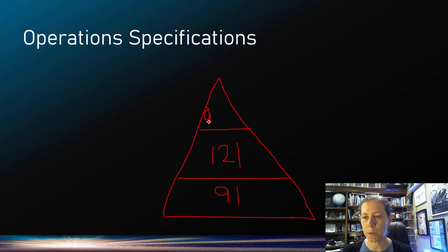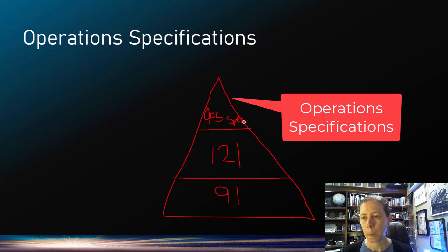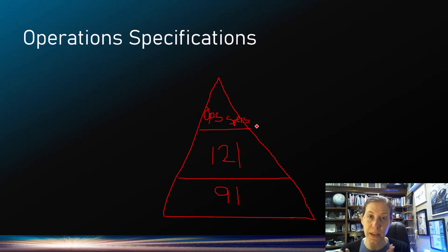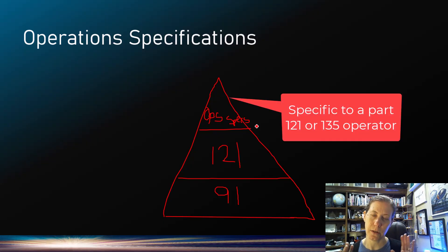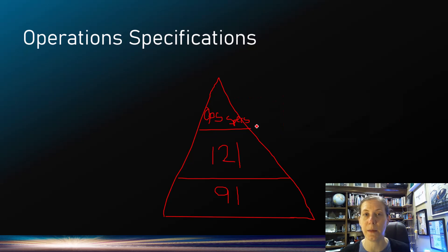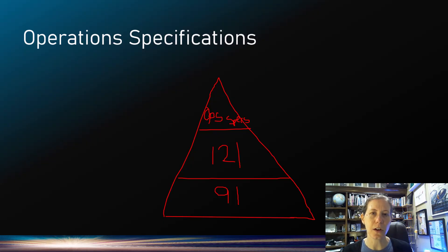At the top of the pyramid is what we're diving into today: ops specs. It is a way that airlines can get specifications tailored for their type of operation. Every air carrier operating under Part 121 has to have operations specifications. Ops specs is a long name, but it contains a lot of different things that govern the operation of the aircraft being operated by that air carrier.